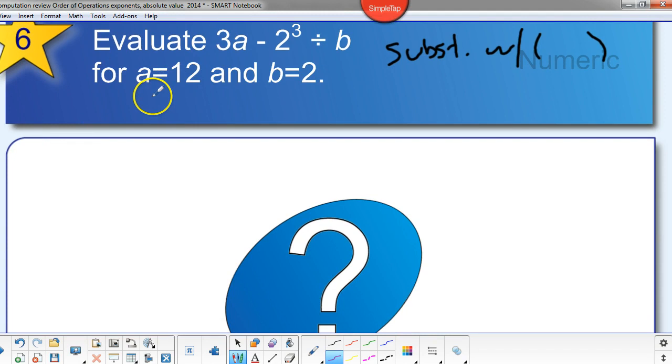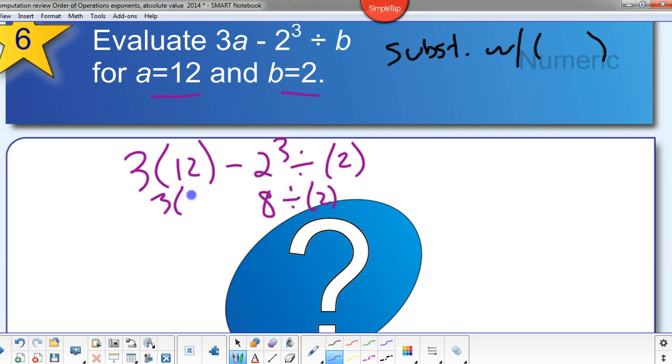Okay. We're evaluating. A is twelve, B is two. Pause it. And then unpause when you're done with the answer. Okay. Substituting in twelve for A and two for B. That's our expression. Do the exponent next. Do the multiplication and division as it comes from left to right. So this is thirty-six. And then four. Thirty-two.